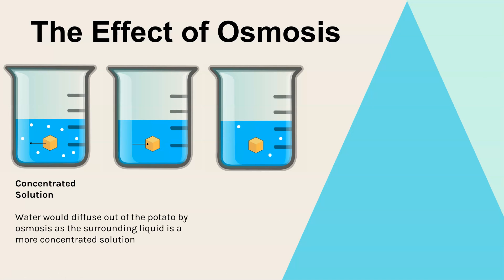But you could be asked to describe the effect that osmosis has on plant material. And in this example, I've got potato cubes in three different solutions, which are all of different concentration. And we're going to look at what would happen to the potato in each of them. So in the first one, we have put a potato in a concentrated solution.